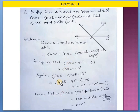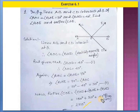Now find reflex angle COE. Reflex angle COE equals angle COD plus angle BOD plus angle BOE. These are the three angles: COD is the straight angle of 180 degrees, angle BOE is 30 degrees, and angle BOD is 40 degrees. Adding all: 180 plus 30 plus 40 equals 250 degrees. This is the answer because a reflex angle must be more than 180 degrees but less than 360 degrees.